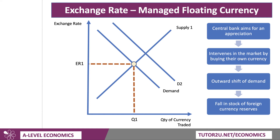Alternatively, they might aim to manage a floating currency by appreciating it — getting the external value to go up. They could do that by raising interest rates to attract hot money inflows, or by intervening in the market and buying their own currency. That causes an outward shift of demand, which in theory might be enough to cause an appreciation of the exchange rate. But it does mean that if you're buying your own currency, you'd be selling foreign currencies, so your reserves of foreign currencies would be falling.